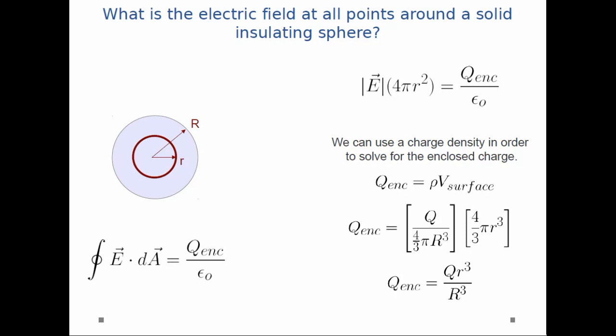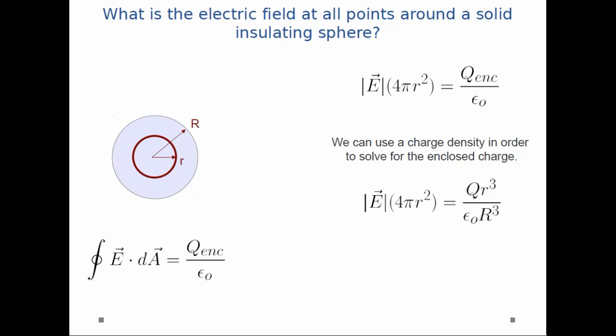And finally, I can take that expression, plug it in for q enclosed, and simplify. And so, I get E is equal to kQr divided by R cubed.